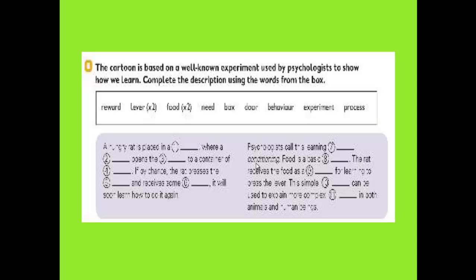This simple experiment can be used to explain more complex behavior in both animals and human beings. Now after filling in the spaces with these words, you can see the answers in front of you. You can write them down in your books and after that we can move to something else.